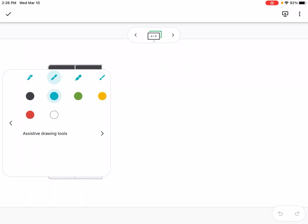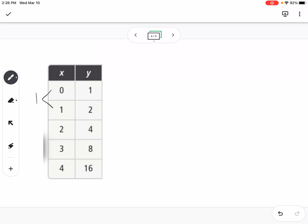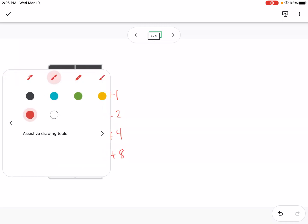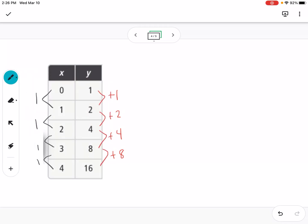So for our last one here, again, I make sure the x's are going up by 1 each time, and they are, so now I'm going to check for first differences. So going from 1 to 2, that's up 1, up 2, up 4, up 8. So we can tell it's not linear.